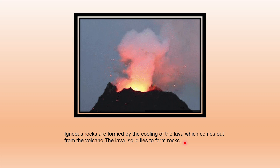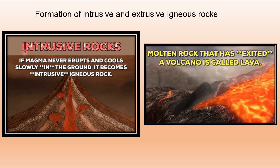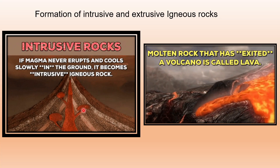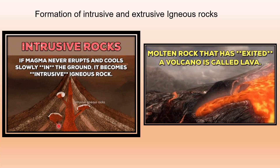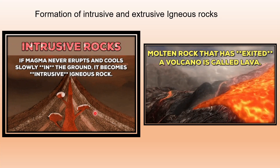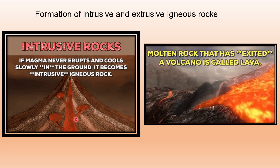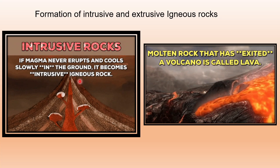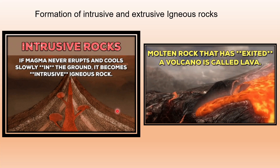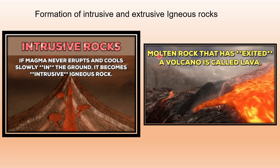Igneous rocks can be of two types: intrusive igneous rocks and extrusive igneous rocks. When the magma is unable to reach the surface of the earth, it solidifies within the cracks and fissures below the earth. The grains become large, they take a very long time to cool, and they are crystalline in nature. This kind of rock which cools under the surface of the earth is known as intrusive igneous rock.